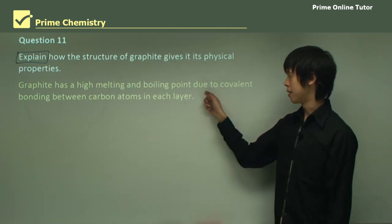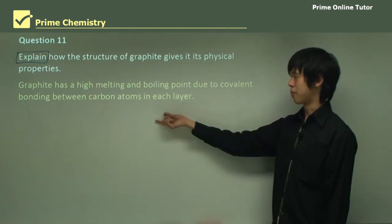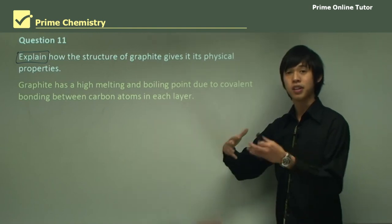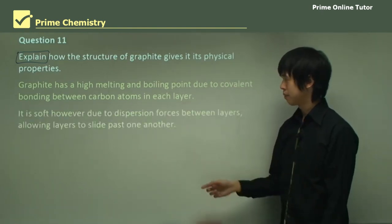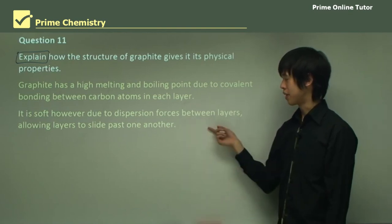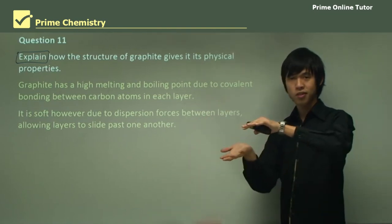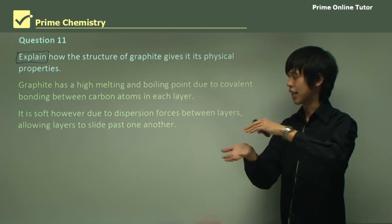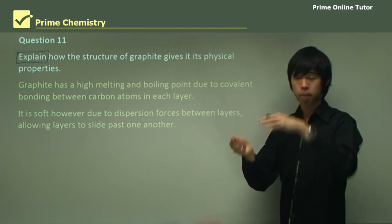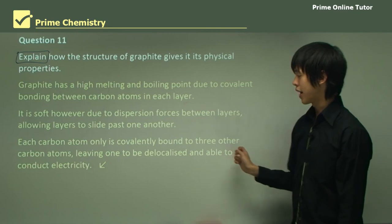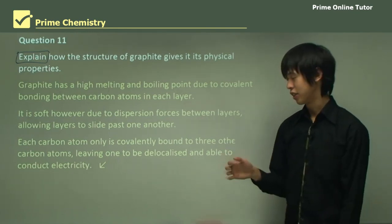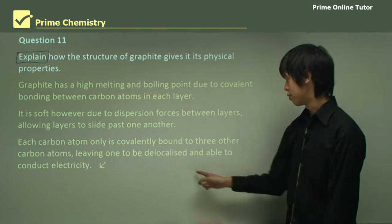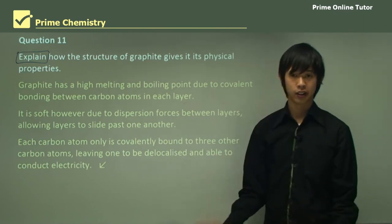Graphite has a high melting and boiling point due to the covalent bonding between the carbon atoms within each layer of that graphite structure. It's soft, however, because only dispersion forces exist between layers, allowing the layers to slide past one another. And each carbon atom is only covalently bonded to three other carbon atoms, which leaves one electron to be delocalised and allow it to conduct electricity.